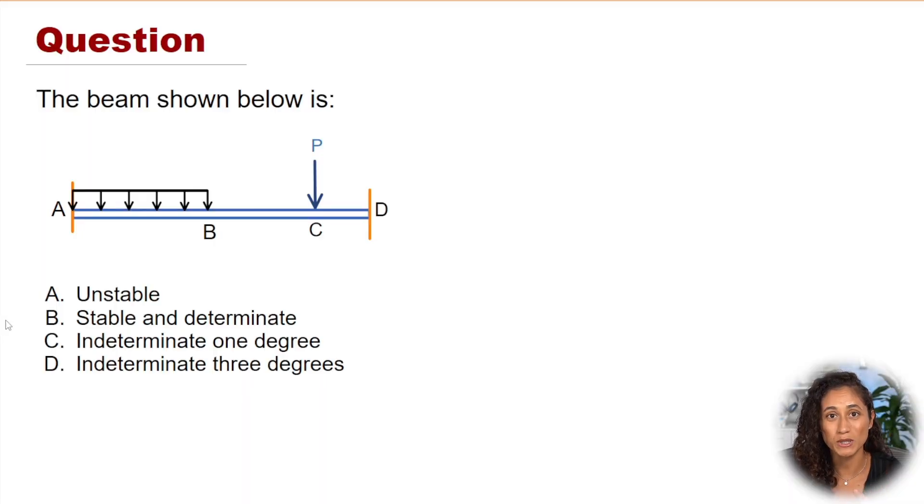We are given this beam and we want to determine if it is unstable, stable and determinate, or indeterminate. If it is indeterminate, we have to also determine the degree of determinacy. The first thing we gotta do is find the reaction forces. Here we have fixed supports, and at D we have a fixed support. When we have a fixed end, we're gonna have r equal to three because we have a y, an x, and moment. Same thing at support D. That gives us a total of six reaction forces.